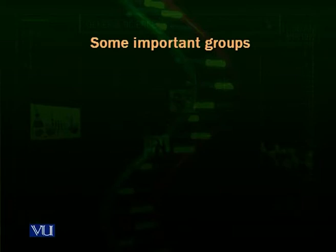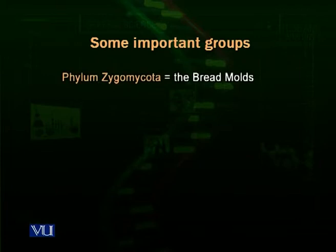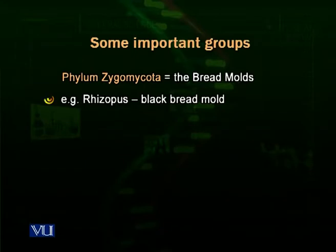Let's have a look at some important groups of fungi. There are certain phyla; we'll talk about just the commonly known important ones. There is one phylum called Zygomycota. Zygomycota are important fungi that actually destroy our breads — they are called the bread molds. Rhizopus, for example, is the black bread mold that gives bread a rusty appearance when left in a humid place at room temperature for a longer period.